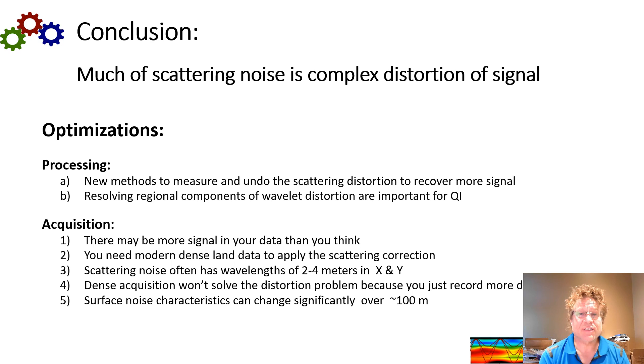In conclusion, much scattering noise is complex distortion of signal, which provides opportunity to optimize both processing and acquisition. In processing, new methods can measure and undo the scattering distortion. And don't forget to handle the larger regional components of wavelet distortion. That's important for quantitative interpretation. In acquisition, you may have more signal in your data than you think. You need modern dense land data to resolve and apply the scattering correction. Remember that the scattering noise often has wavelengths of two to four meters in X and Y. Dense acquisition won't necessarily solve your distortion problem because you just record more distorted data. And finally, surface noise characteristics can change significantly over 100 meters. And this is actually somewhat predictable if you try.